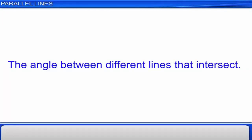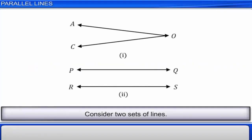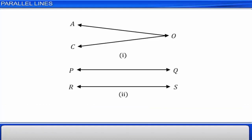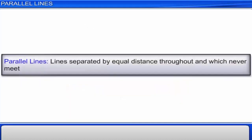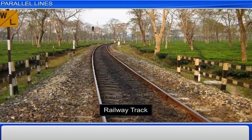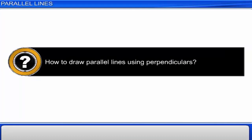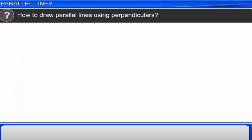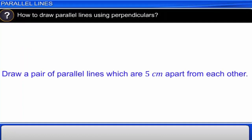We have learnt to find the angle between different lines that intersect. Let's recap. Consider the two sets of lines as shown. We observe that the first set of lines meet at a point O and the second set of lines never meet. Parallel lines are defined as the lines which are separated by equal distance throughout and which never meet. One such example of parallel lines in our day-to-day life is a railway track. Let's learn the procedure to draw parallel lines using perpendiculars. Draw a pair of parallel lines which are 5 cm apart from each other.